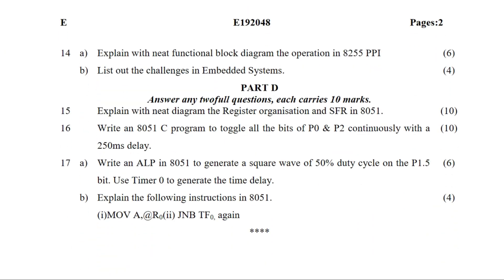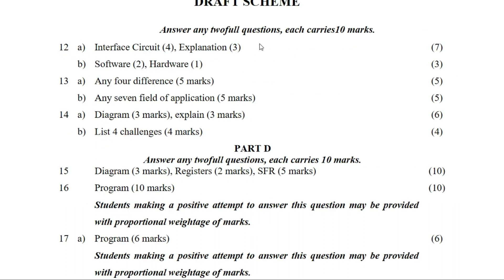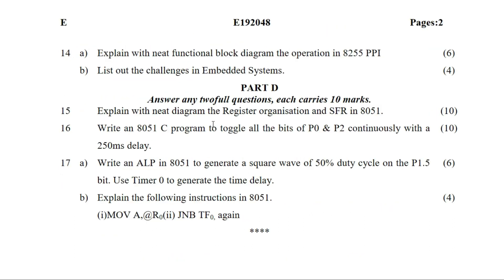Next question: explain with a neat functional block diagram of 8255 PPI. If you want to describe the control word of the PPI, you will need to use the functional block diagram. Explain the block diagram to describe each pin and then provide the explanation. Explanation with figures is important.